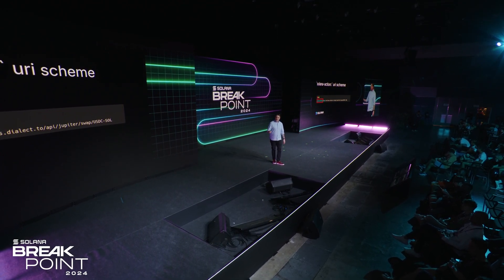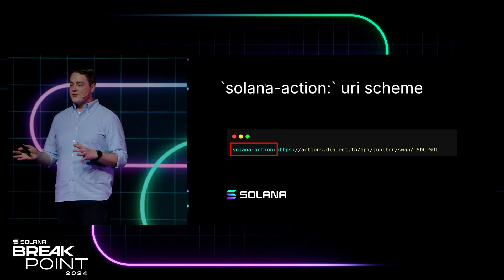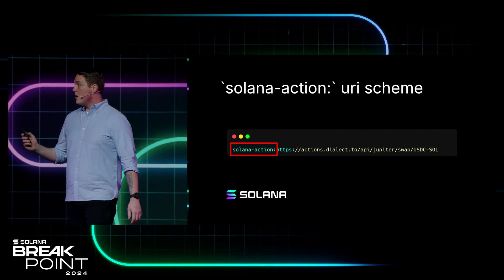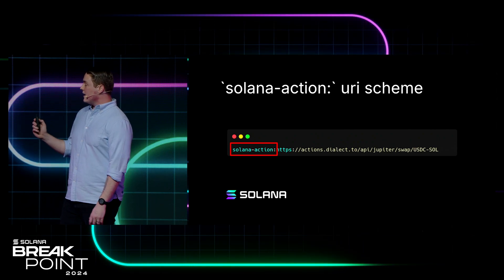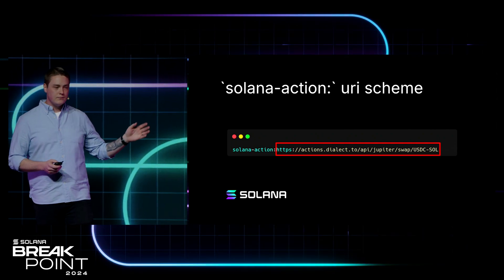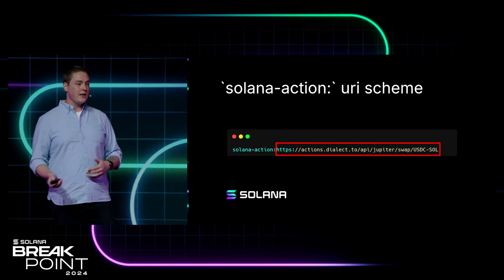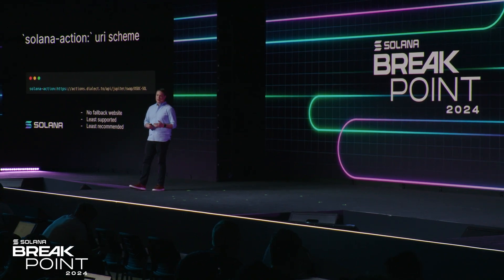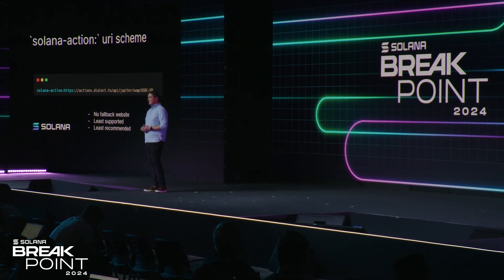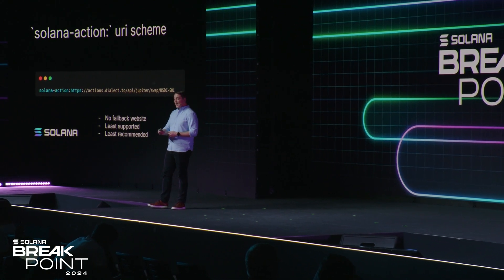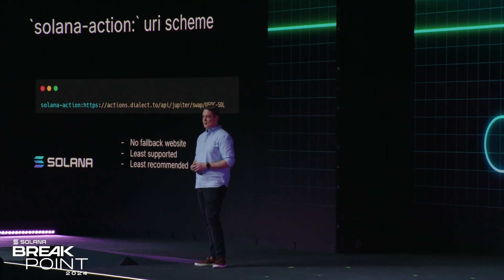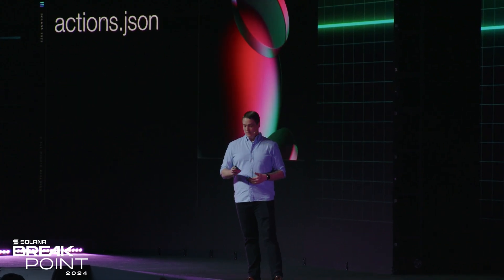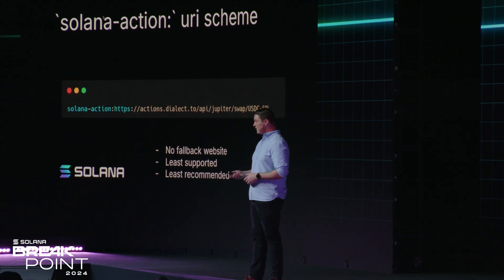The Solana Action URI scheme looks kind of similar to what you'd see across the Internet — an HTTPS URL — except it's different. When sharing a URL, HTTPS is the protocol. With Solana Actions, it's 'solana-action.' Instead of sharing a normal domain, you're actually sharing your Action API endpoint directly within the URI scheme. The drawback is that you don't share this type of URL across the Internet — applications and users don't know what to do with it. There's no fallback website. If you share this Solana Action URI scheme on Twitter or in an email, nothing happens — it just looks like text, you can't click it. So there's no fallback experience, it gets the least support, and is the least recommended. Basically, don't ever share this.